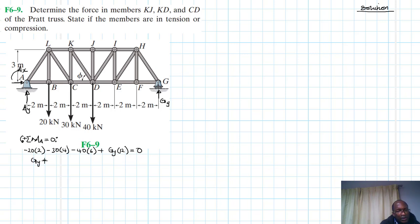Equal to zero. And then GY is just going to be equal to minus 20 by 2, minus 30 by 4, minus 40 by 6, divided by 12. So this is equal to 33.33 kilonewtons.